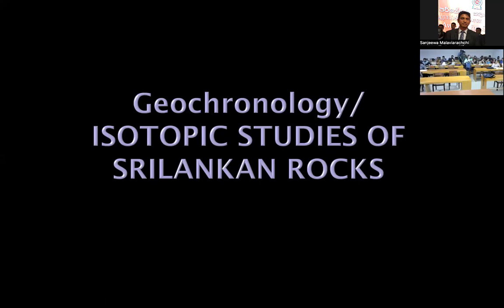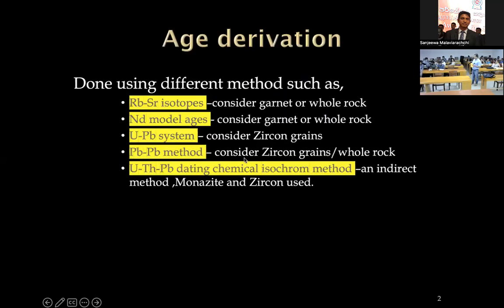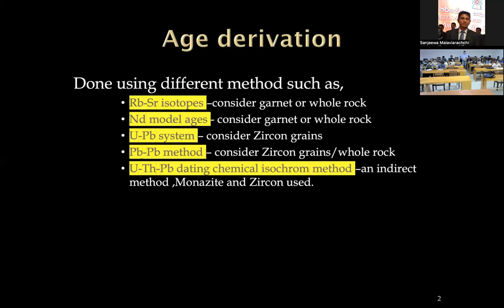We will continue. We are covering different methods for derivation of Earth's ages. We have several methods: first, rubidium-strontium isotopes; then neodymium model ages; then the uranium-lead system; the lead-lead method; and the uranium-thorium-lead dating method. We also have another method called the chemical isochron method.